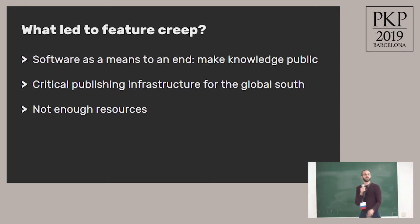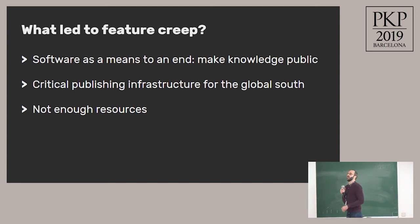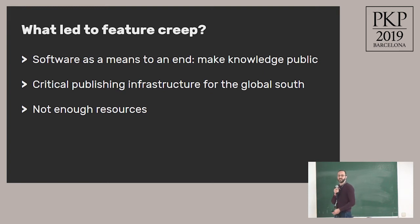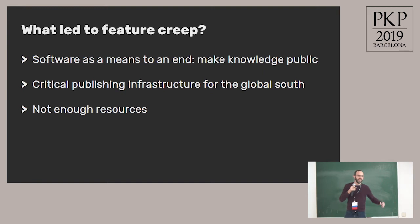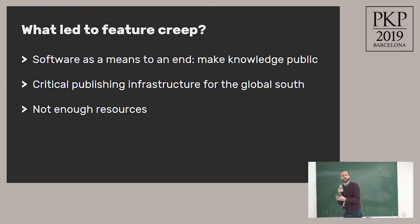Software for PKP is really a means to an end, and that is to make knowledge public. So from the very beginning, if OJS did not have a feature necessary to migrate from a closed publishing system into an open publishing system, PKP felt a real responsibility to make that happen as soon as possible. It's not the kind of VC-funded startup world where you can build the smallest possible app and plow money into customer acquisition — it really mattered that the software did what people needed it to do. So that led to pressure for features.